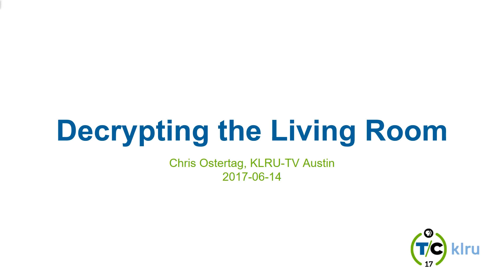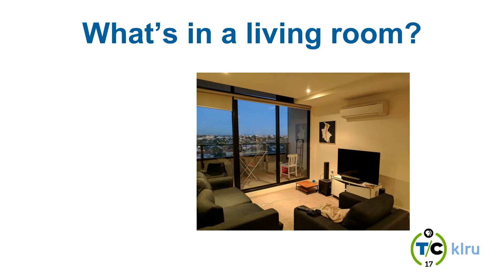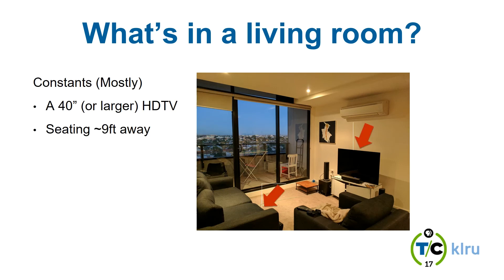We're going to start out with what's in a living room. Here's a fairly common living room. A couple constants: a 40-inch or larger HDTV — and to be specific, we're talking largely about the US here. So when I'm not specific, I'm talking about the United States; the data is largely US-specific. You sit about nine feet away from it. That nine-foot viewing distance is actually pretty constant between the US and Europe — Europe sits a tiny bit farther, about 9.8 feet, but functionally about the same.